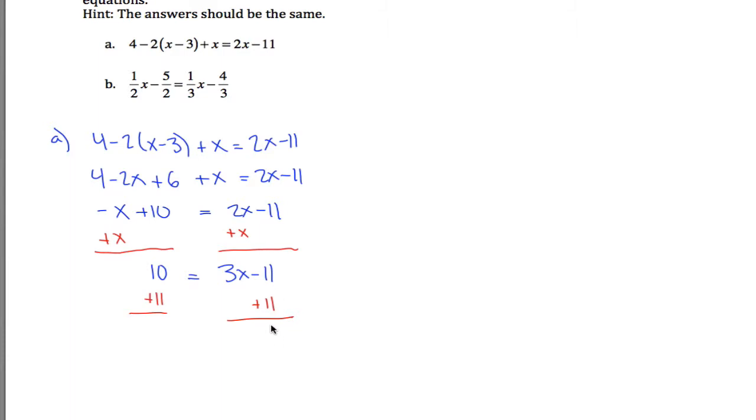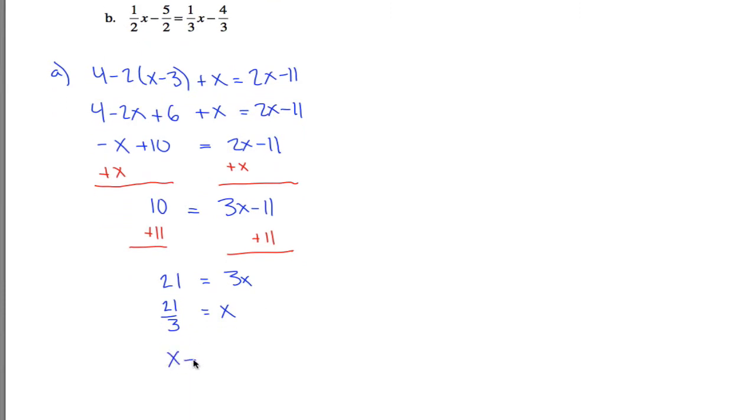On the right side, the negative 11 and the positive 11 cancel out. On the left side, 10 plus 11 equals 21. And so now if you divide both sides of the equation by 3, you get x is the same as 21 thirds. In other words, x is equal to 7.